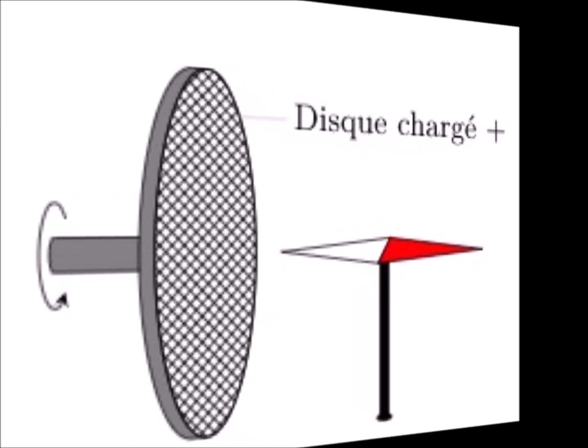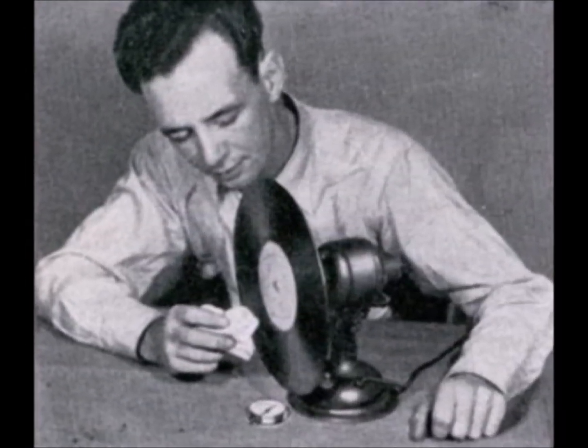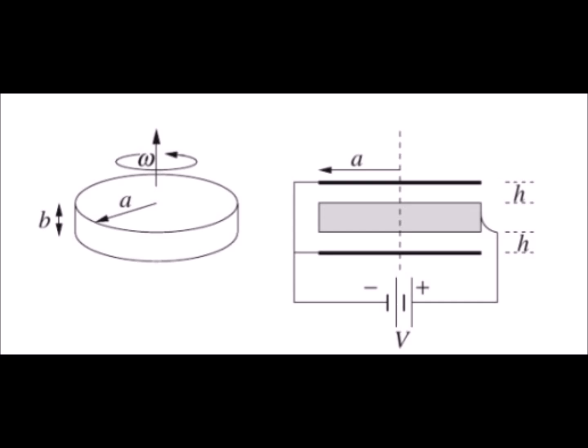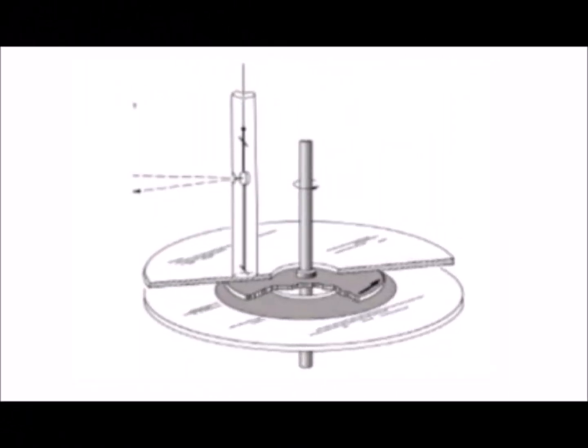Rowland's experiment is usually presented simplistically by a compass being deflected by a rotating electrically charged disk. The reality is much more complex. There is only a magnetic field near the edge of the disk, as seen in this photograph. Rowland used a sort of circular capacitor: a rotating conductive disk, positively charged, was placed between the negative plates of the capacitor. Two compasses hang from a thread; the lower one is placed on the edge of the rotating disk. The small deviation resulting from the magnetic field is detected by a mirror attached to the wire.